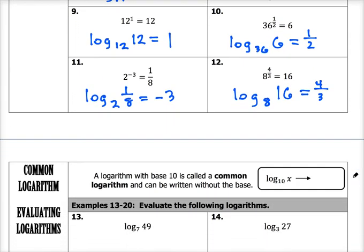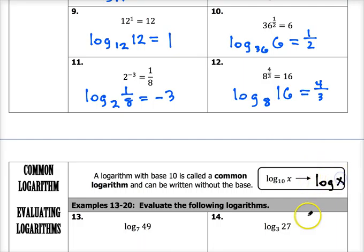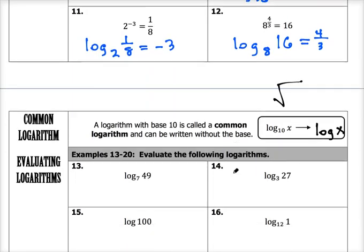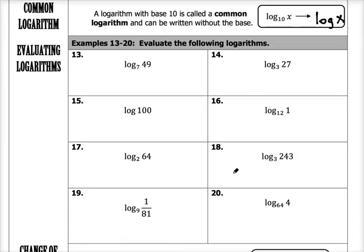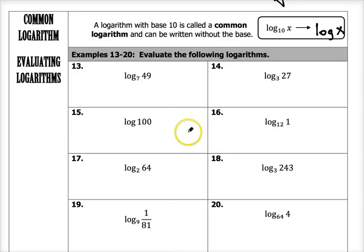On the backside of your notes, let's talk about what it means to be a common logarithm. A logarithm with base 10 is called a common logarithm, and more often than not you're going to see it written without the base. Log base 10 of x is usually just written as "log x" with no base written. If you see a logarithm with no subscript, that is automatically base 10 — similar to how a radical sign without an index is understood to be a square root.